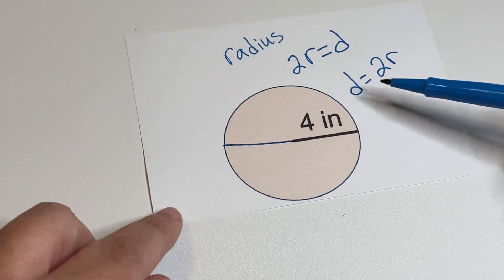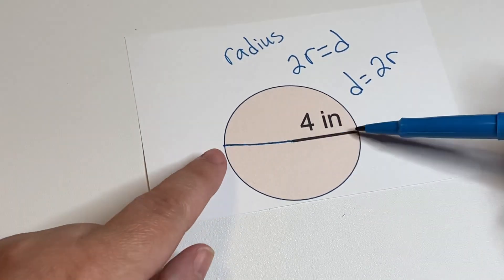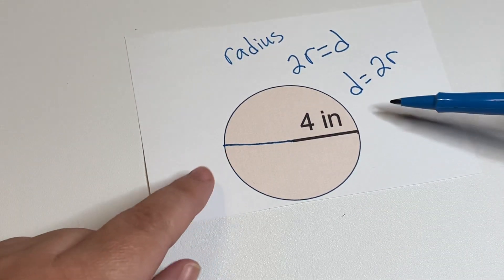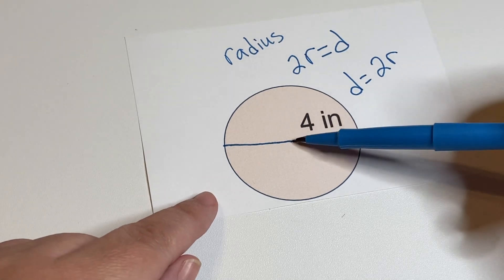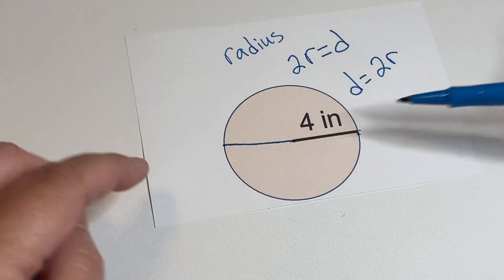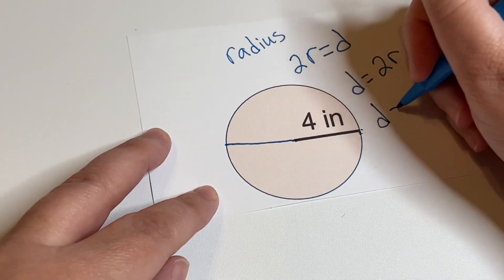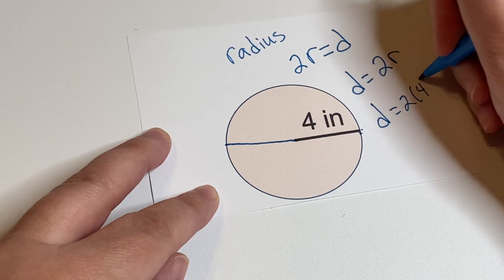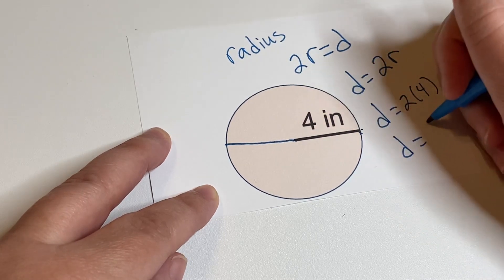Now the formula is good to remember and you can remember okay diameter is all the way across. So two of the radius which are half is gonna be the diameter. So we would just do diameter equals two times four. So the diameter is equal to eight.